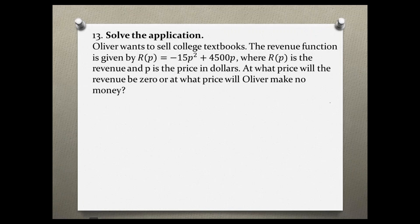Problem number 13. Solve the application. Oliver wants to sell college textbooks. The revenue function is given by R equals negative 15p squared plus 4500p, where R is the revenue and p is the price in dollars. At what price will the revenue be zero, or at what price will Oliver make no money?